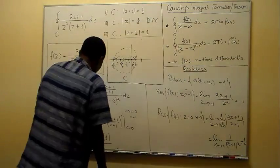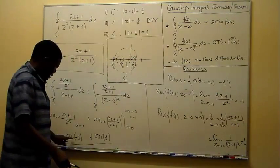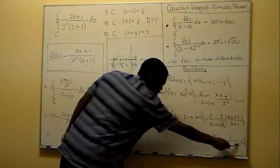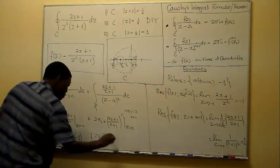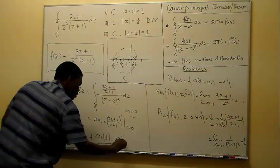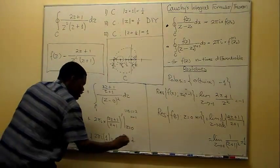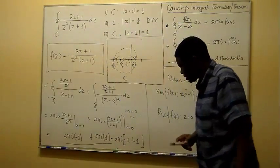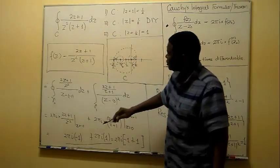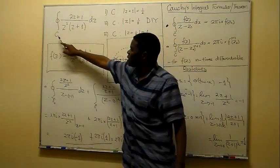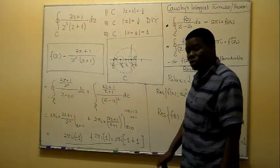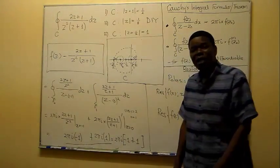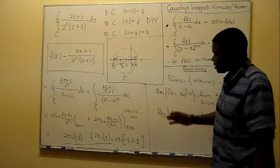Evaluating at z = 0 gives 1. So we have residue at z = minus 1 equal to minus 1, and residue at z = 0 equal to 1. Therefore the integral equals 2πi times (minus 1 + 1) = 0, which confirms the residue theorem: the integral of a function around a closed curve equals 2πi times the sum of residues at the poles inside the curve.